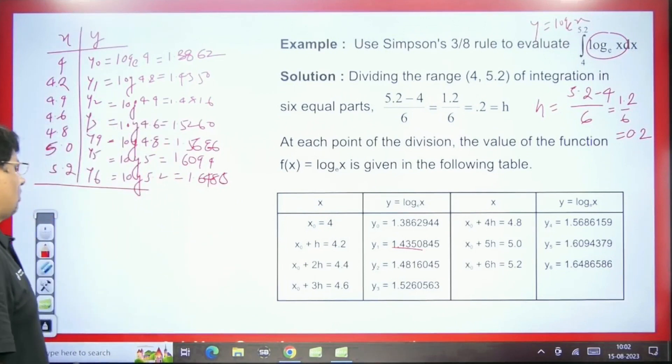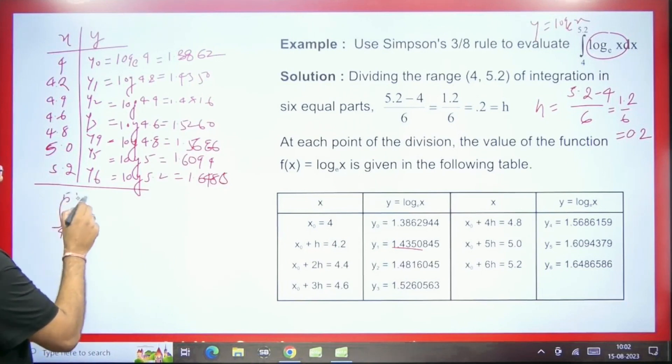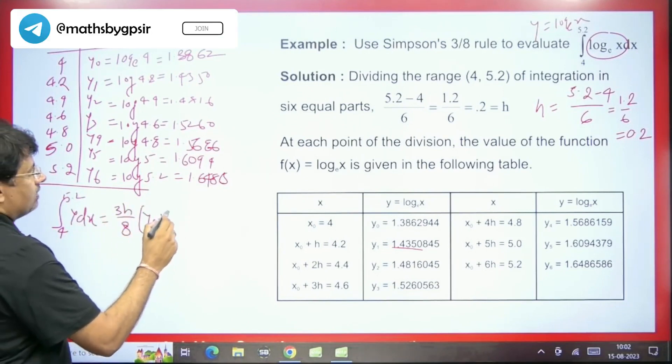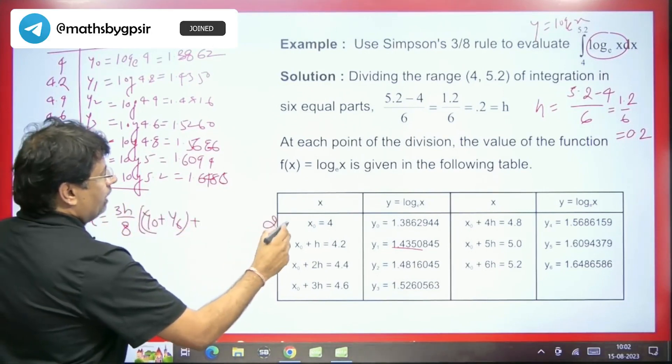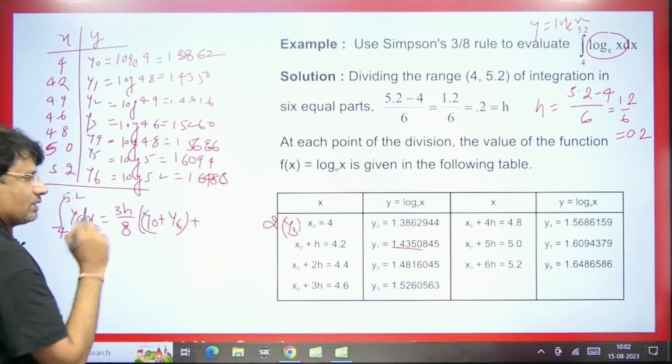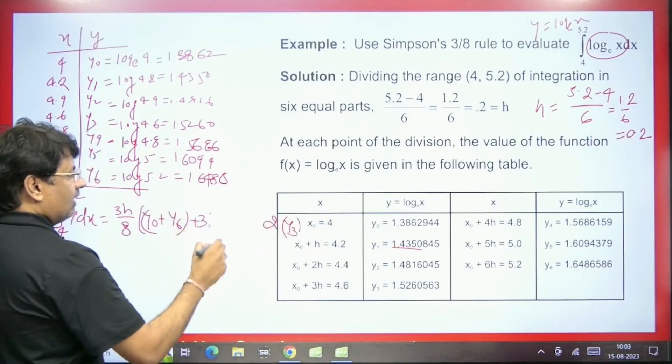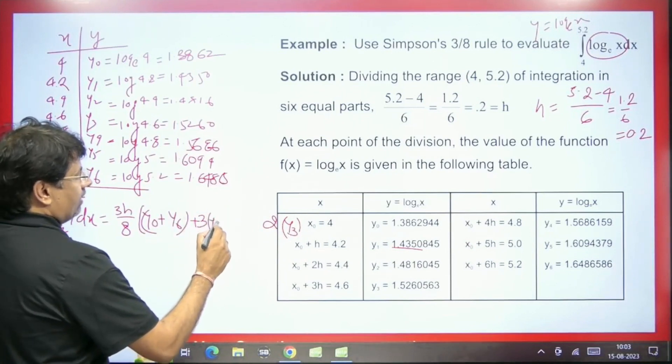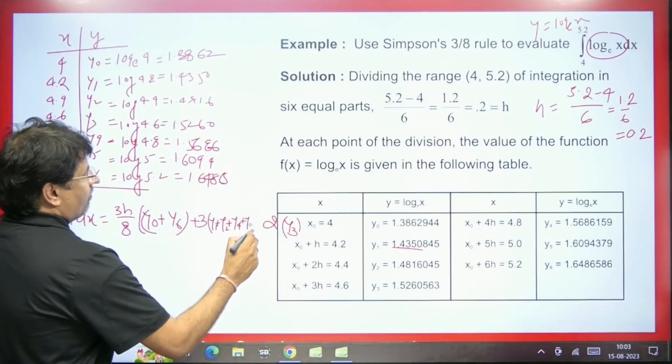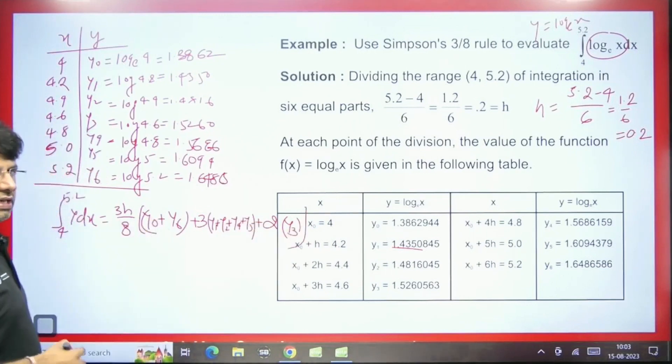Whenever we use this formula, what is the formula? Pay attention. The formula that we have like here it has been given as from 4 to 5.2 ydx. So the formula we have here is 3h by 8, first term plus the last term. 2 into multiple of 3. In multiple of 3, you will get y3 and y6 but y6 is already written now. We are doing 3 into remaining terms. The remaining terms we have are y1, y2, y4 and last we have is y5. So this will come and here what we have is its formula.